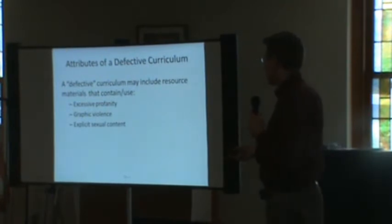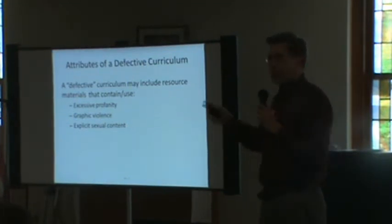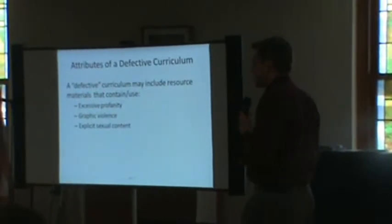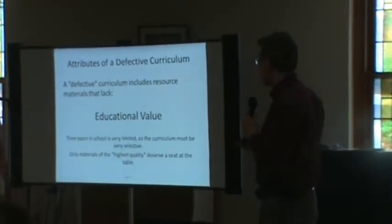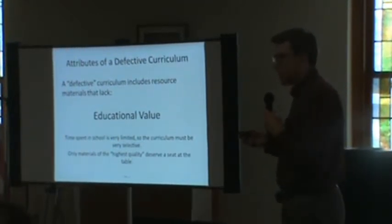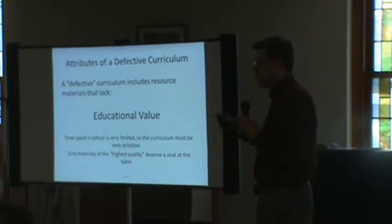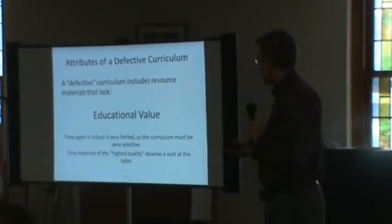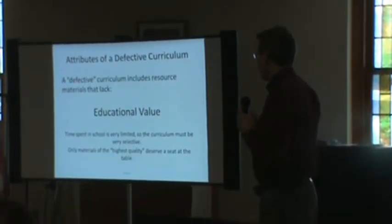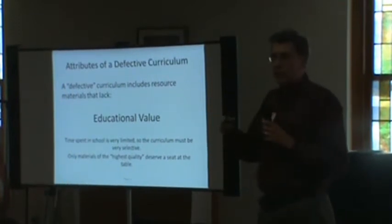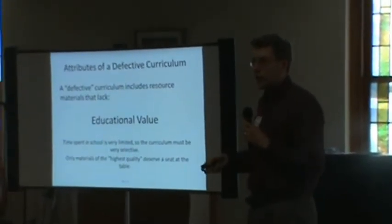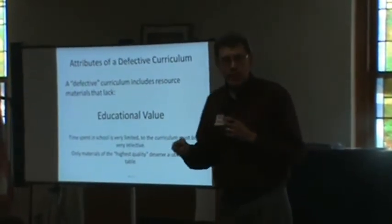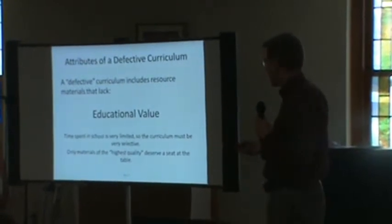Other examples of defective curriculum material include excessive profanity — some profanity is now allowed, so I'm talking about excessive profanity — graphic violence, or explicit sexual content. Finally, a defective curriculum should also flag materials that lack educational value. The amount of time students spend in school is very limited, so the curriculum has to be very selective. Only materials of the highest quality deserve a seat at the table. Even if a book isn't offensive, if it's just a bad book with very little educational value, that alone should be reason to remove it.